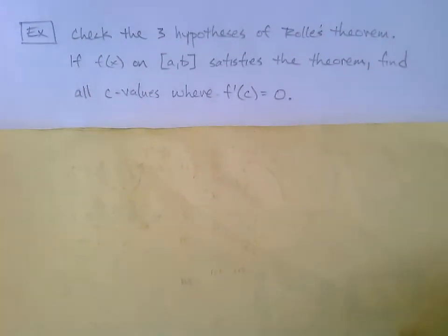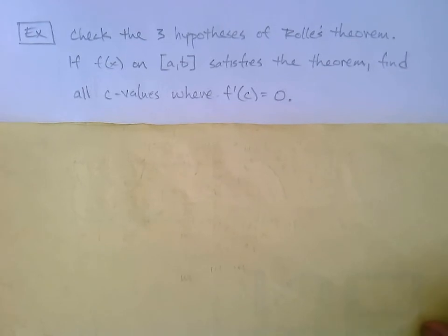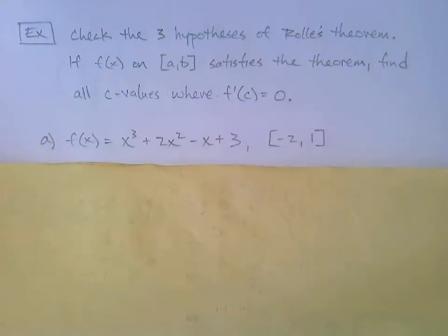Okay, so Rolle's theorem guarantees there's at least one. It says there exists c between a and b where it happens. So in other words, it's at least got to happen once. But it might happen multiple times depending on what the function is. Okay. So what are examples going to look like? Your most basic examples are going to say this.